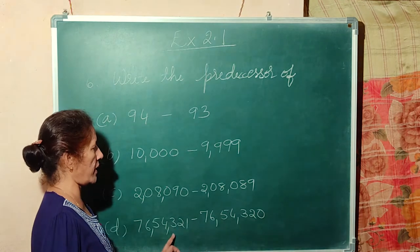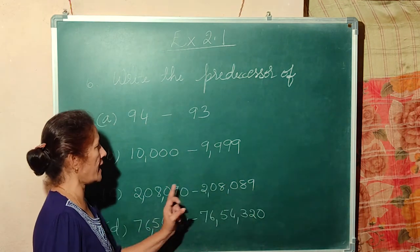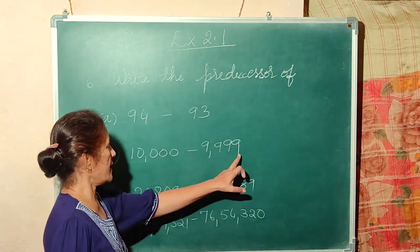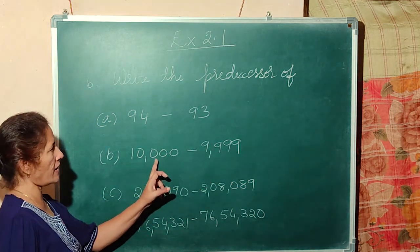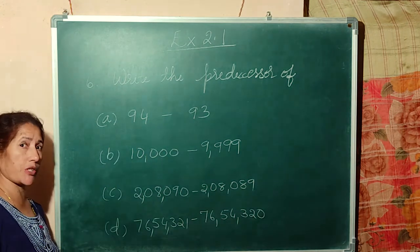3,20 and 3,21. 89, 90. 9,999 and 10,000. 93 and 94. Understood?